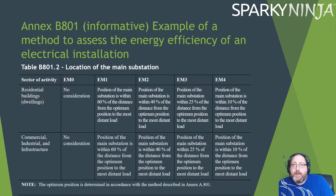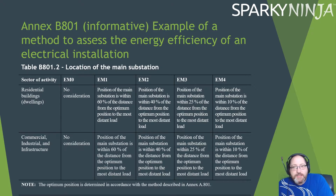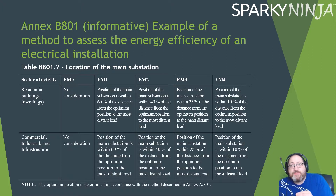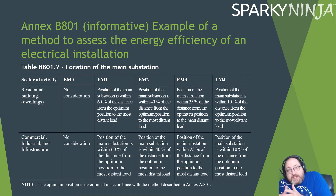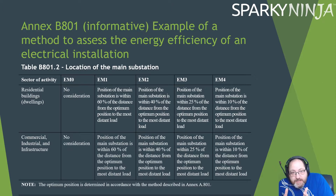For location of the main substation — having done the barycentre method calculation — if there's no consideration, you get zero. If you position the main substation within 60% of the distance from the optimal position to the most distant load, you get a one. The closer the substation is to the optimum position relative to the most distant load, the higher your score.